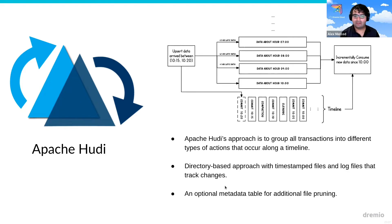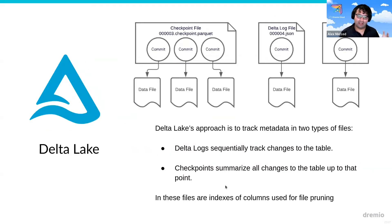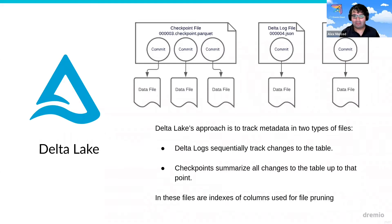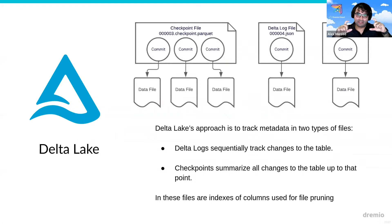Hoodie takes this timeline approach, and then Delta Lake basically uses two types of files: Delta logs. Each Delta log is essentially a change — in the same way Hoodie has a timeline with timestamps, these Delta files work similarly. You make a change to the table, a Delta log gets created; make another change, another Delta log gets created. Using those Delta logs, it can recreate the table at any particular point in time — in the same way that Hoodie can use a timeline or Iceberg can use snapshots to recreate the table at different points in time. Eventually, you may want to group some of those Delta logs into a checkpoint file so that you don't have to have so many Delta log files — you create checkpoints that summarize those changes.